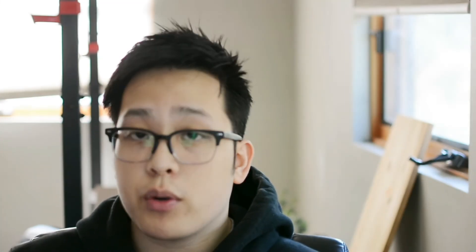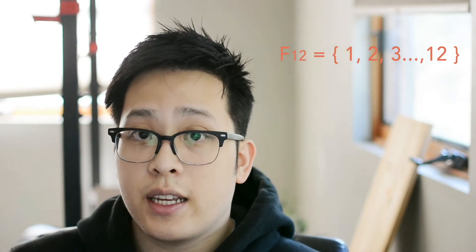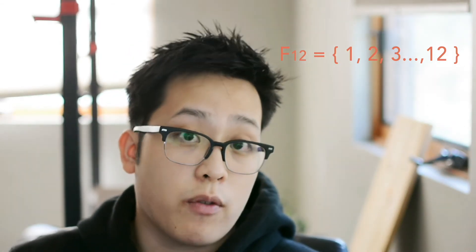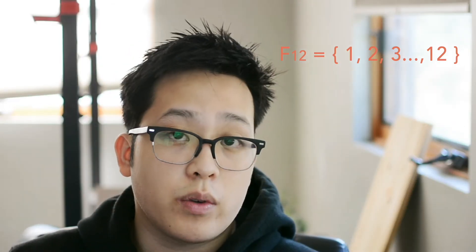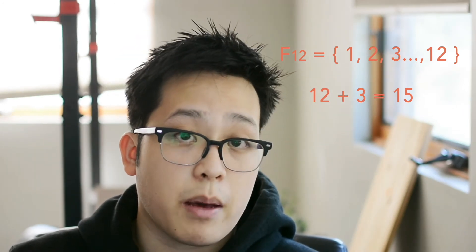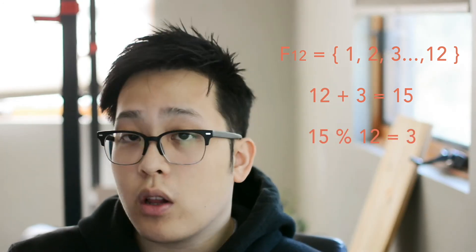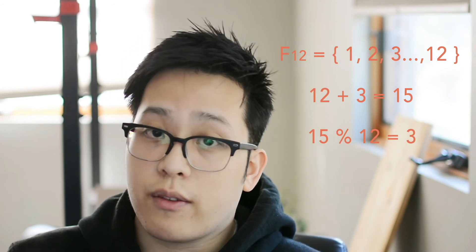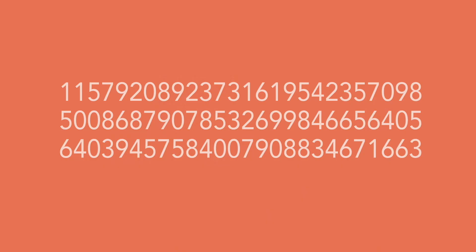This is thanks to modular arithmetic. Think of it like a 12-hour clock — we have 12 numbers in a set. If you add 3 to 12 o'clock, you would get 15. If you then reduce 15 by modulo 12, you would get 3 o'clock, which is in our initial given set. For Bitcoin, this is the prime field that we are given.